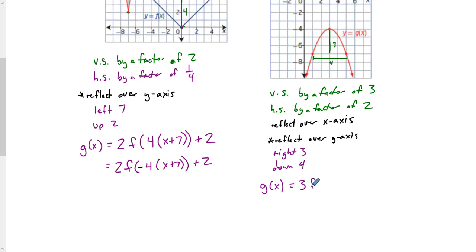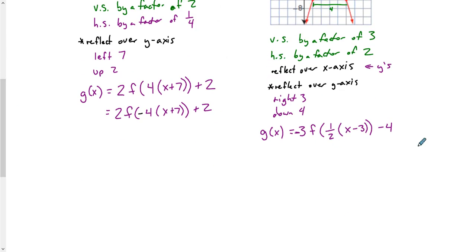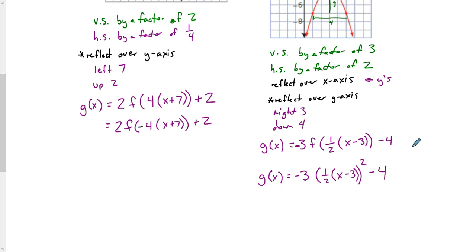To find the equation: g(x) equals — vertical stretch by a factor of 3, reflected over the x-axis means a negative out front, so negative 3. Horizontal stretch by a factor of 2 means the b value is one half. Moving right 3 is x subtract 3. Down 4 is subtract 4. So g(x) = negative 3·f(one half·(x − 3)) − 4. If this were an x-squared function, g(x) = negative 3(one half(x − 3))² − 4. If you're given the equation, it makes a lot more sense to write it with the actual equation.